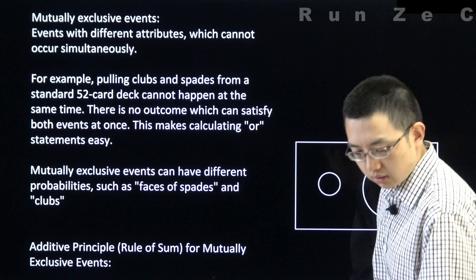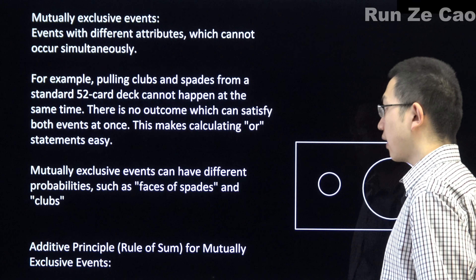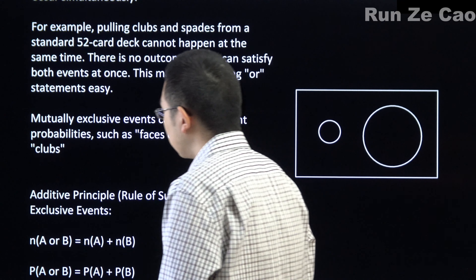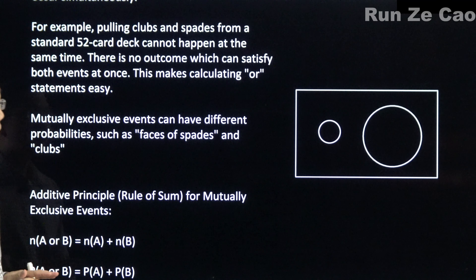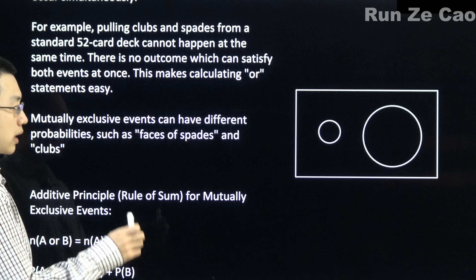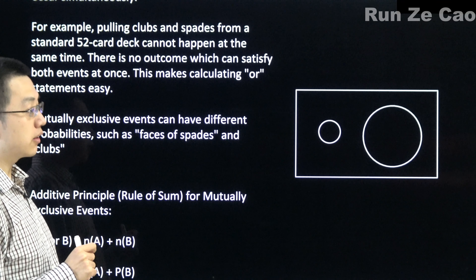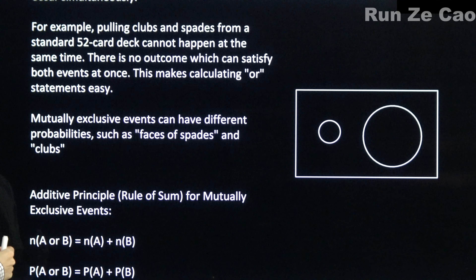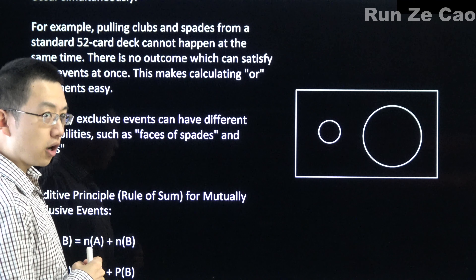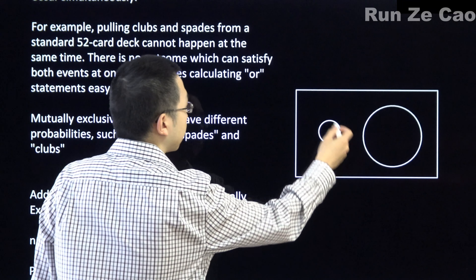Mutually exclusive events are events that have different attributes which cannot occur simultaneously. You can't have it come up 1 and 6 at the same time. But you can have it come up with 6, which is divisible by 2 and 3 at the same time. So those would be non-mutually exclusive events.